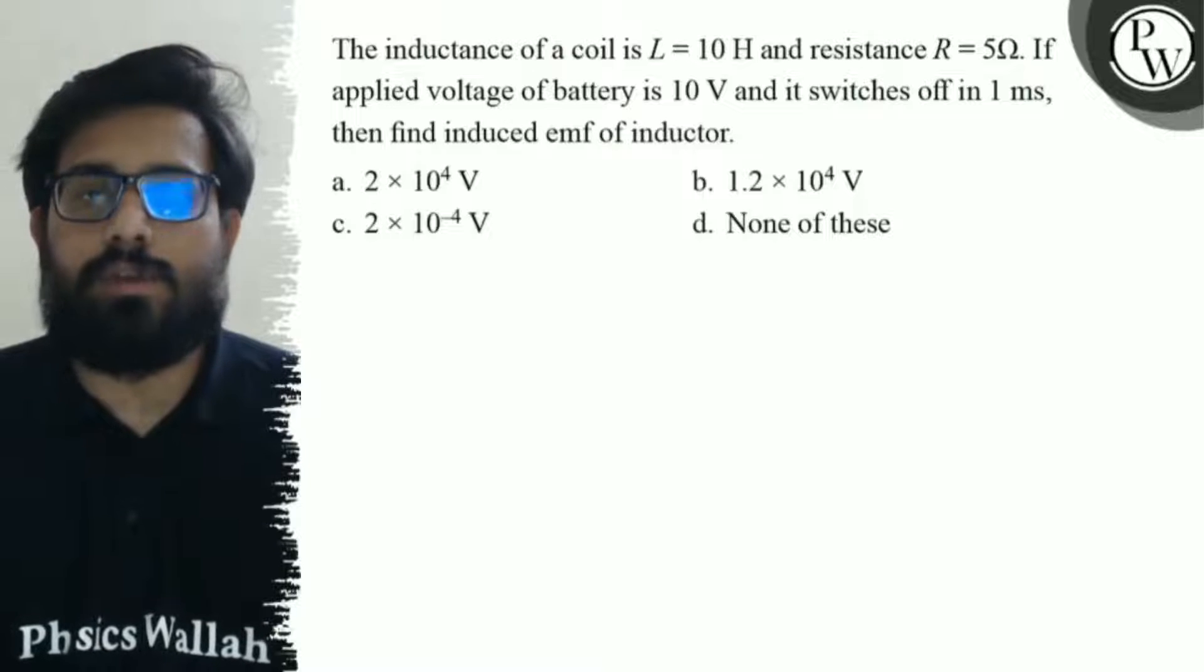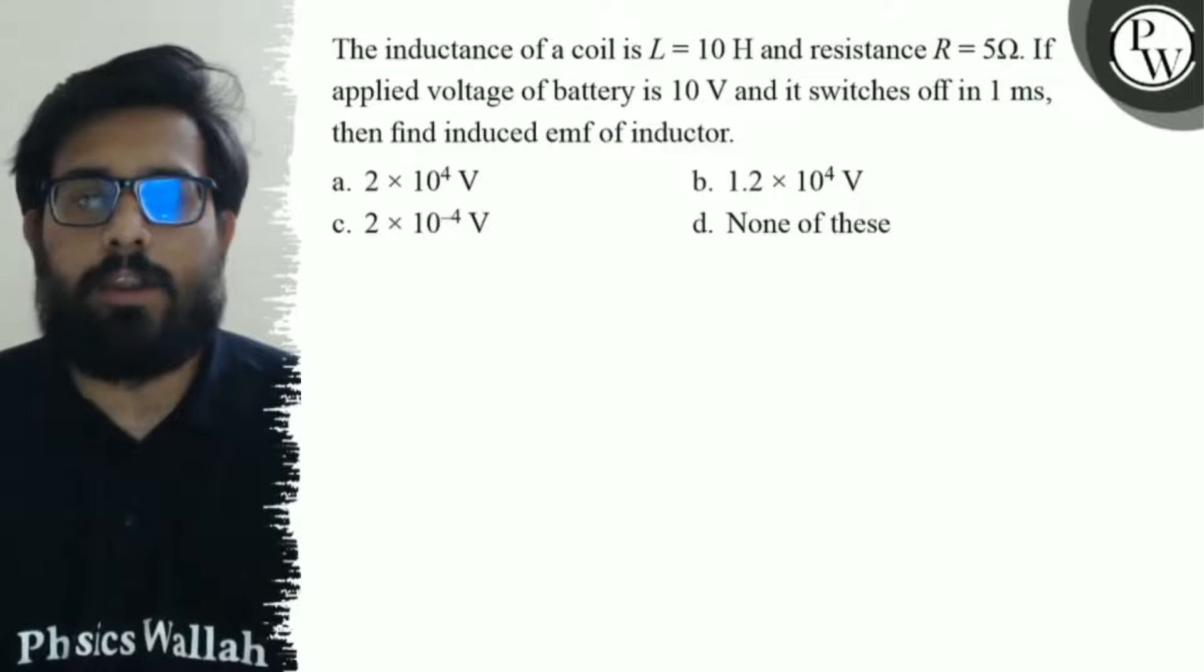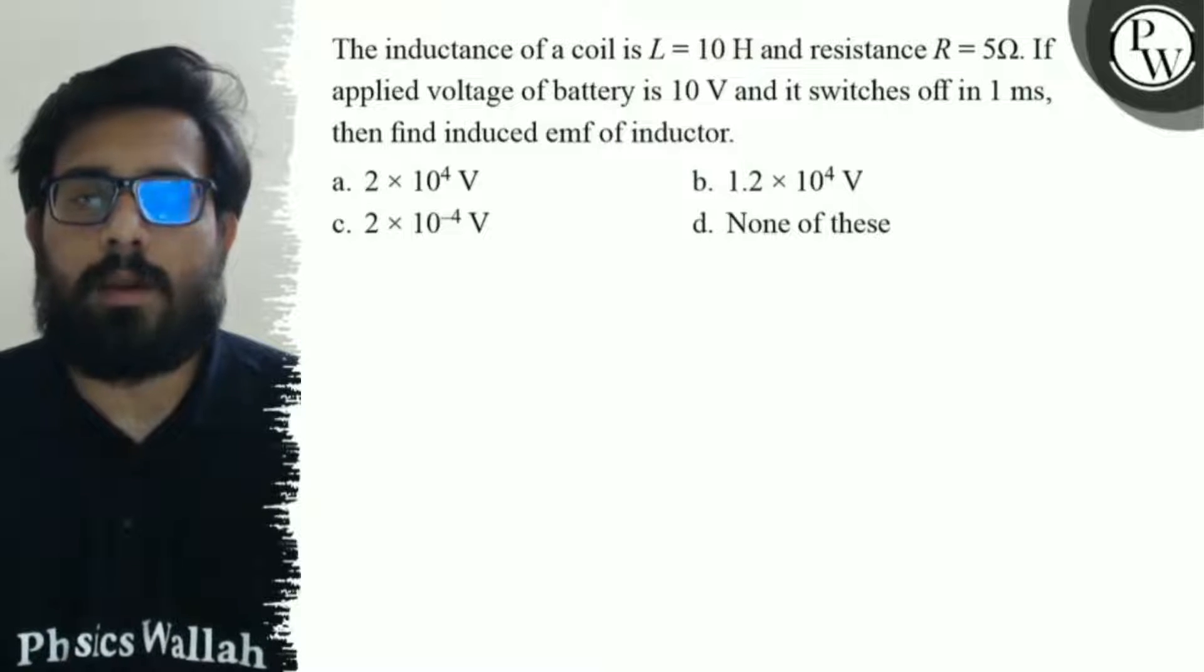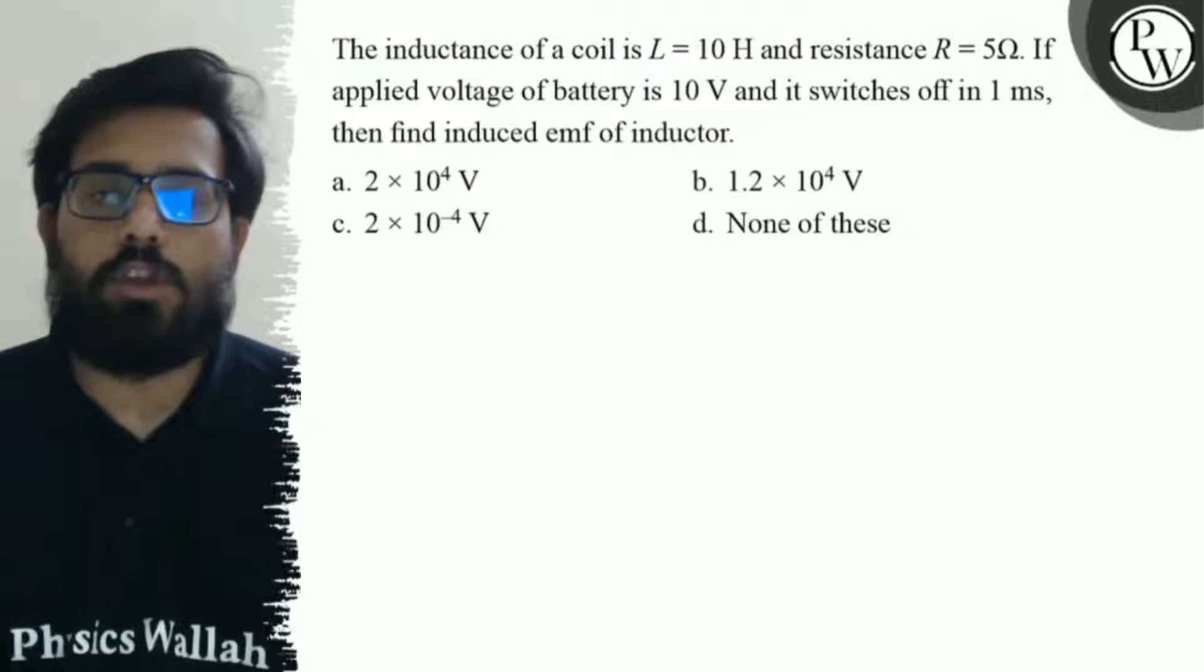The first option is 2 into 10 to the power 4 volt, second option is 1.2 into 10 to the power 4 volt, third option is 2 into 10 to the power -4 volt, and the fourth option is none of these.